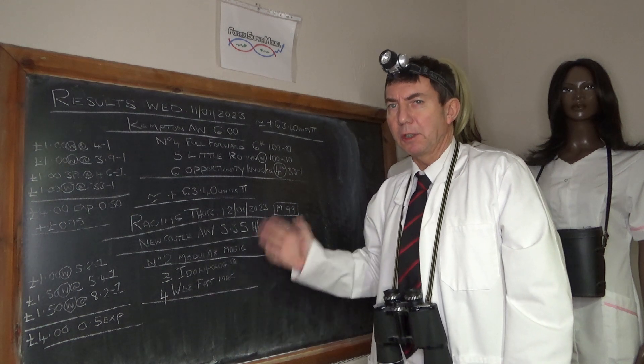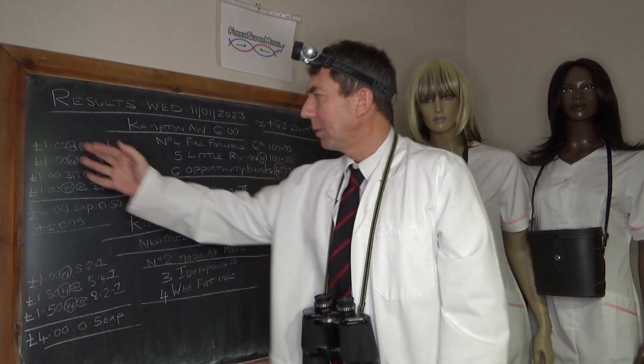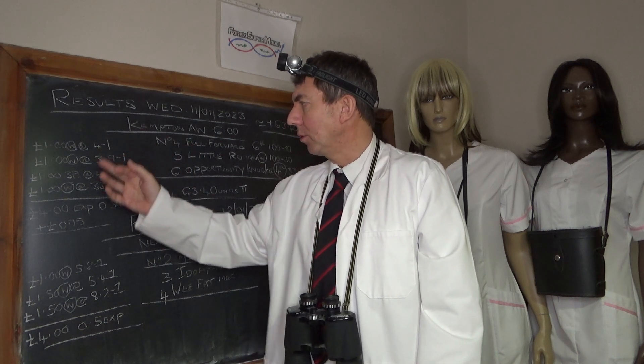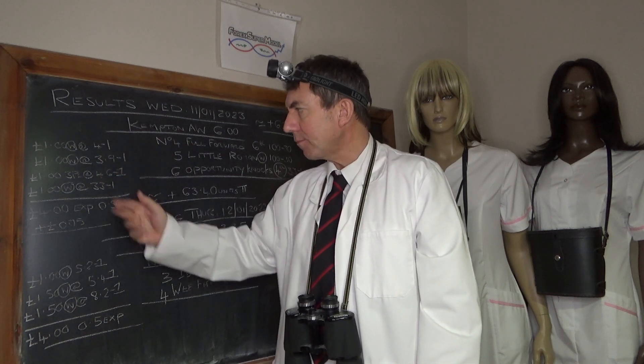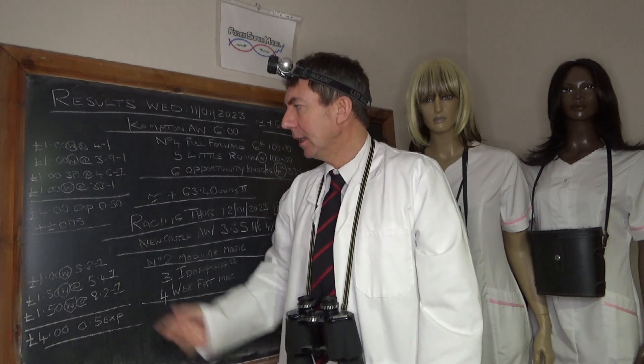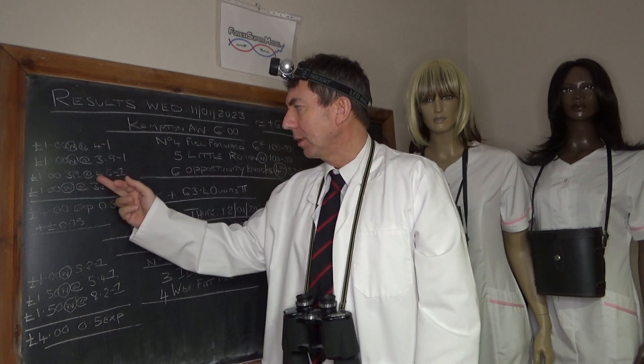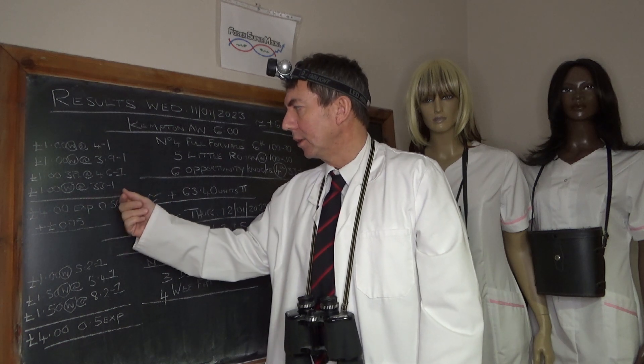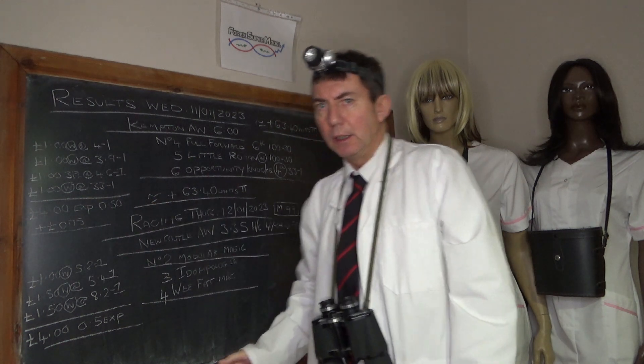We had three places inevitably so we just missed out there. We had a pound per eight pound unit on the front two at 4 to 1 and 3.9 roughly, which is 100 pounds each for us, and we had a pound three places at 4.6 to 1 average and a pound win at 33 to 1 as well.